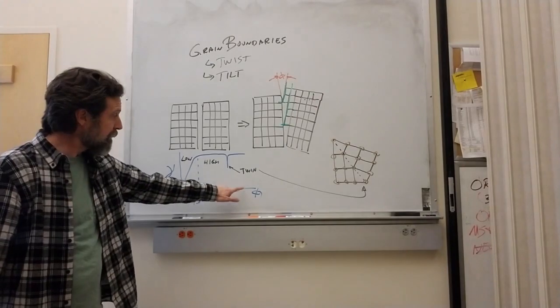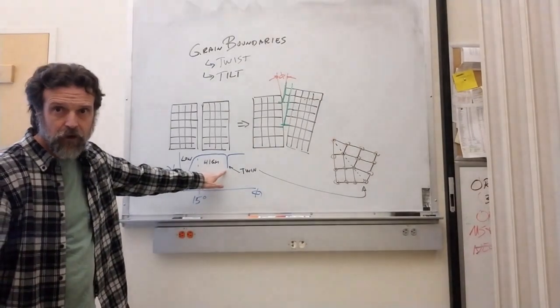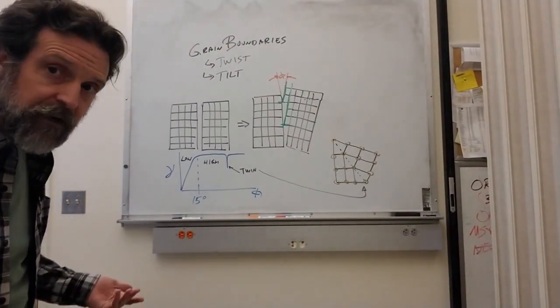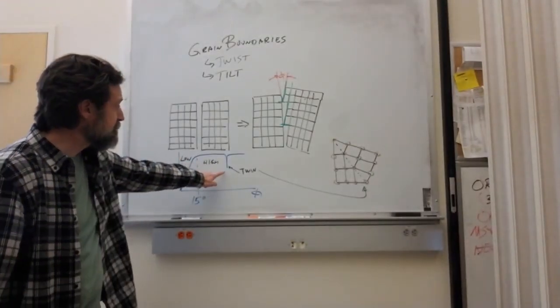Worth noting that we also have a few situations where we keep changing the angle and all of a sudden the energy drops. The reason the energy drops is because that constitutes a very special orientation in which we form what's called a twin.